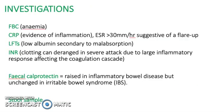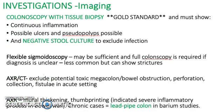For investigations, you want to do an FBC to check for anemia, CRP, LFTs, INR, and fecal calprotectin with a stool sample. Imaging includes colonoscopy with tissue biopsy, flexible sigmoidoscopy, abdominal x-ray, and CT.